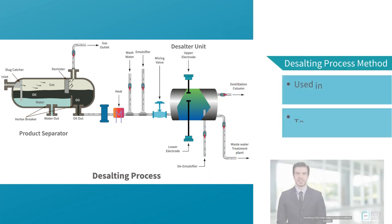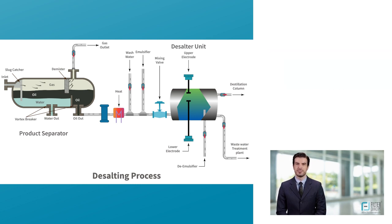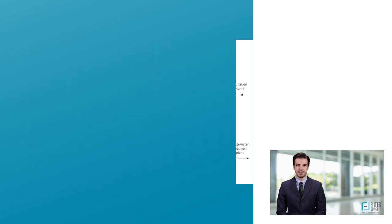Desalting is the initial stage of the crude oil refining process. It is the method to extract salt content and other oleophobic impurities from crude oil, such as chlorides and sulfates of sodium, potassium, calcium, and magnesium. The salt content of crude oil almost always consists of salt dissolved in small droplets of water that are dispersed in the crude.